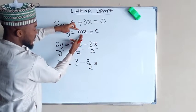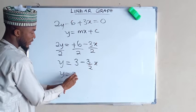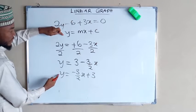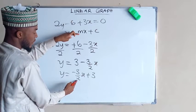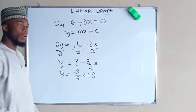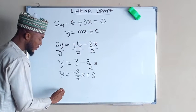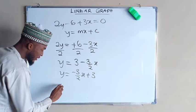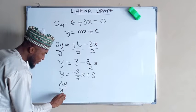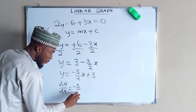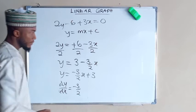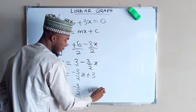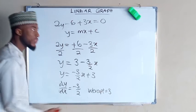Then to rearrange it into this form, we have y equals negative 3 over 2 x plus 3. Change in y divided by change in x is nothing but negative 3 over 2, which is the slope. And the intercept is 3. These are the two things we need in order to plot our graph.